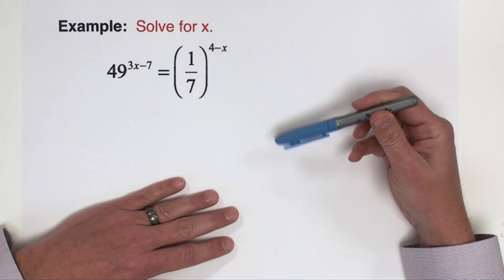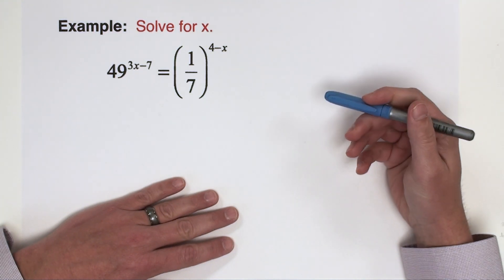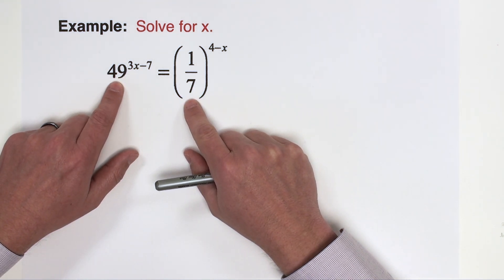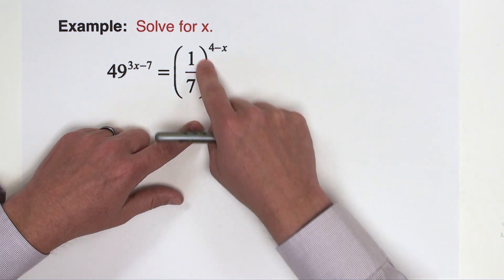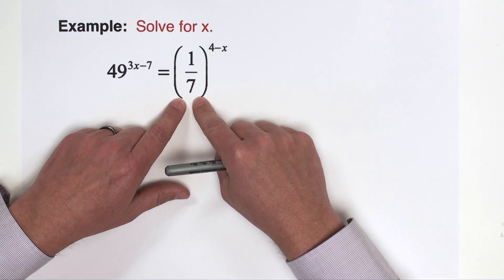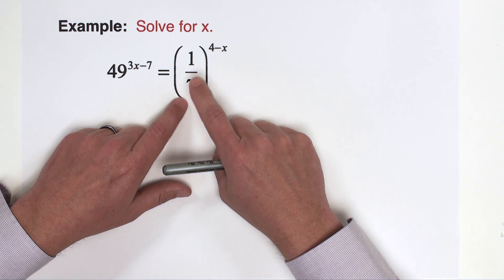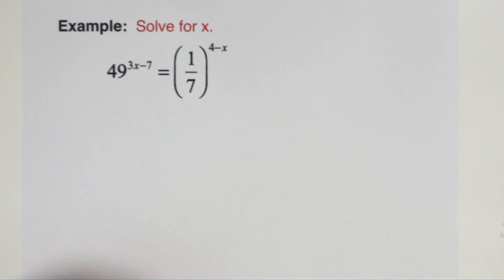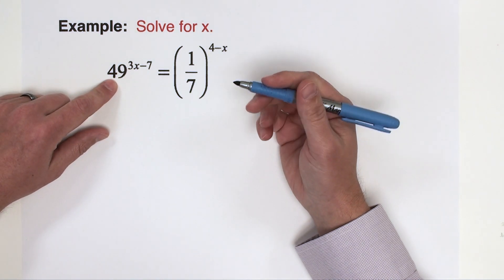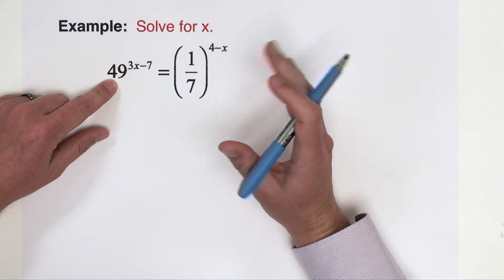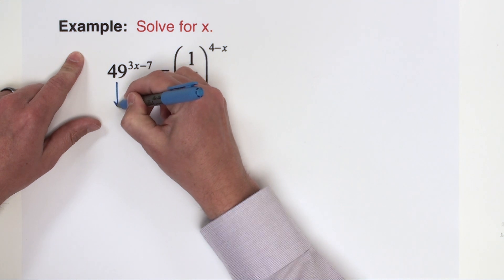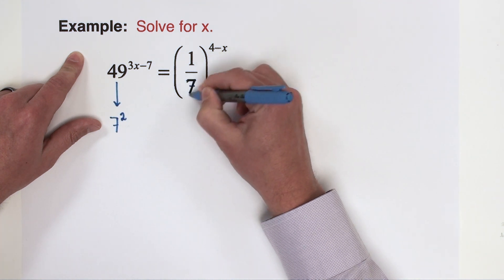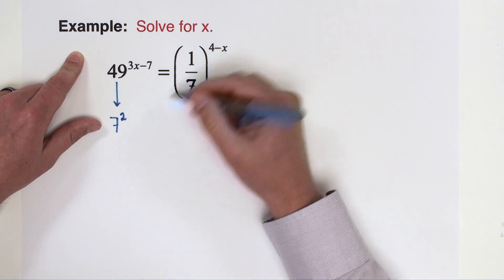The final example that I have of changing the bases to solve exponential equations is this one here. It's just like the last one in that we're going to have to re-express the bases on both sides of the equation. But sometimes I see that students see this fraction and kind of panic a little bit, but I want to show how to re-express the fraction specifically so that we can solve problems like this. So 49 is only a power of 7, I suppose, so we're going to drop 49 down to 7 squared. Conveniently, we have a 7 over here on this side as well, so I'm going to have to re-express that also as a power of 7.